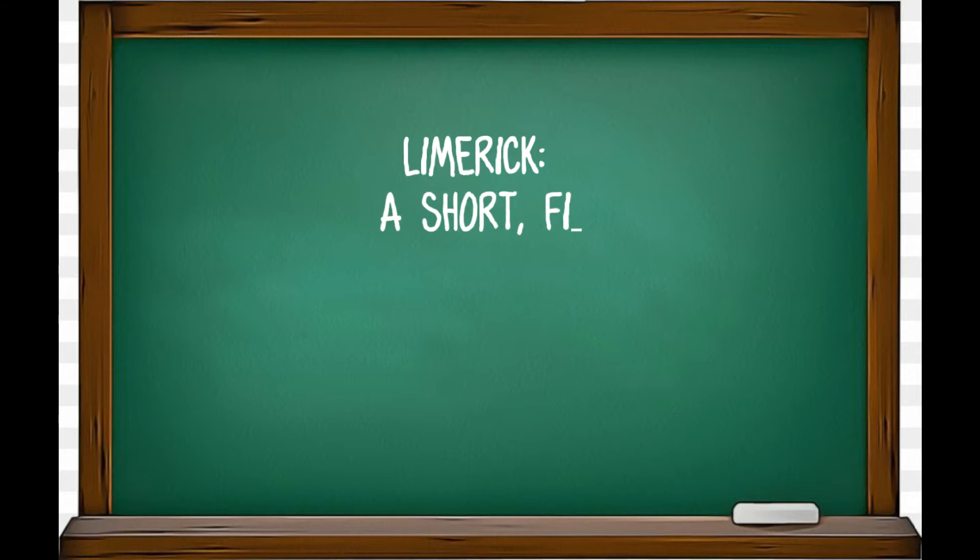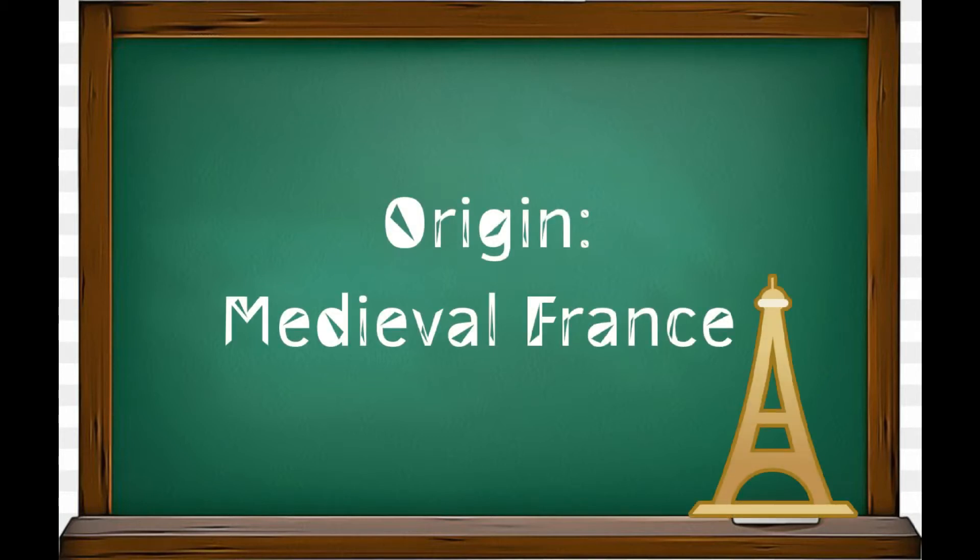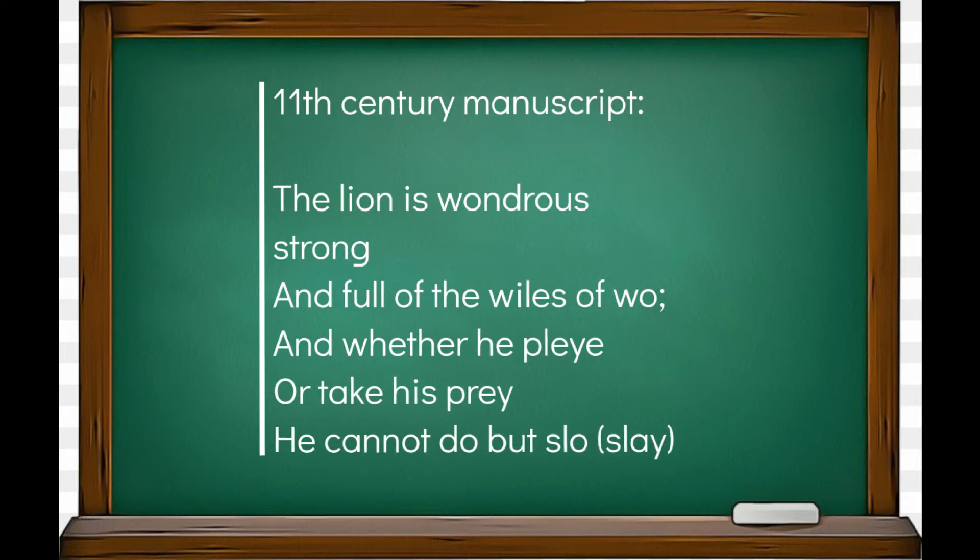A limerick is a short five-line poem that is often comical and nonsensical. The exact origin of the limerick is shrouded in folklore and mystery, and although no one knows for sure, the limerick form is thought to have originated in France during the middle ages. An 11th century manuscript demonstrates the limerick's rhythm: The lion is wondrous strong and full of the wiles of woe, and whether he play or take his prey, he cannot do but slow.